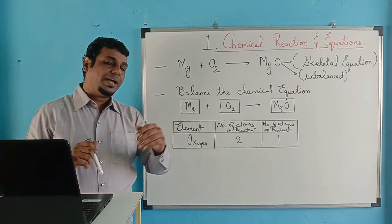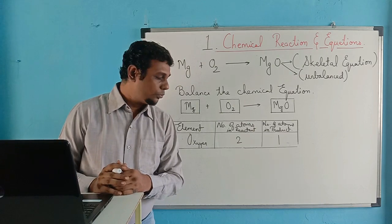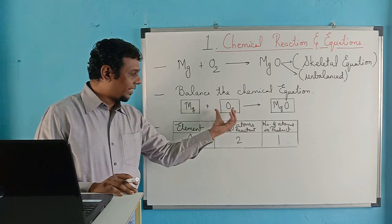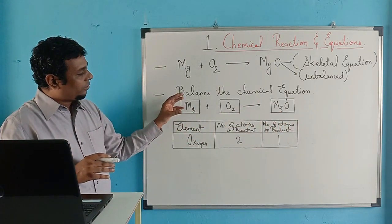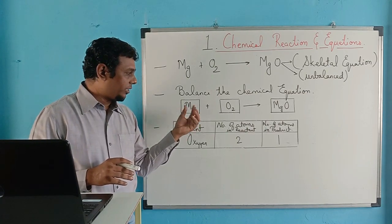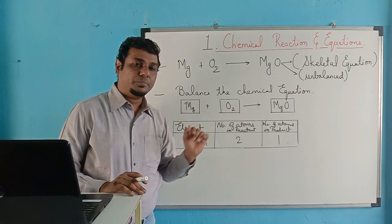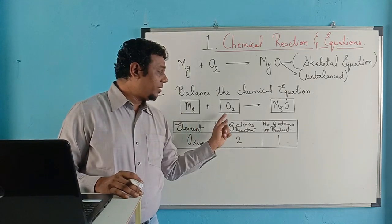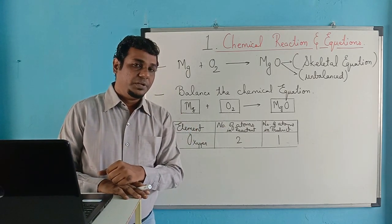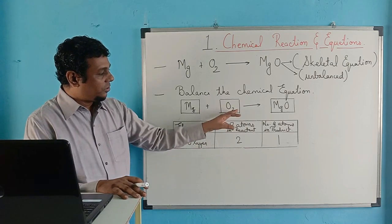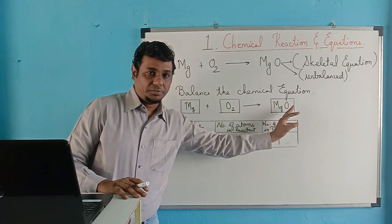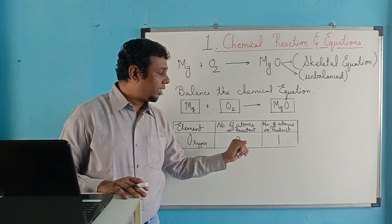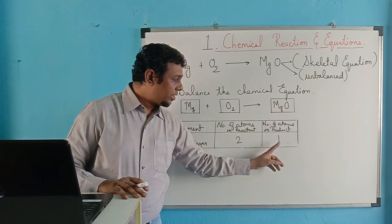To balance the chemical equation, the first step is to identify the compounds or elements in the reactants and the product. I have counted magnesium, oxygen, and magnesium oxide as the final products. The next thing is to find the element with the highest number of atoms. Oxygen has two atoms in the reactant as the highest number in the whole equation, but in the product it has only one.